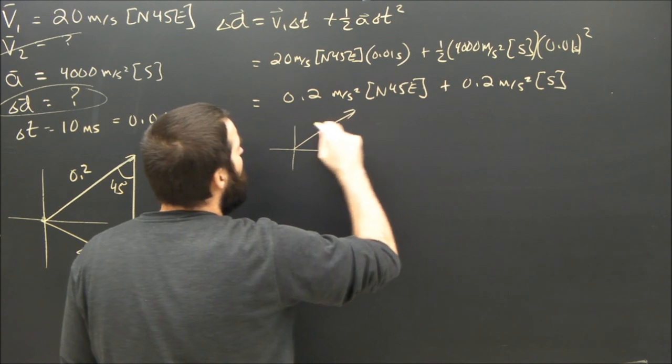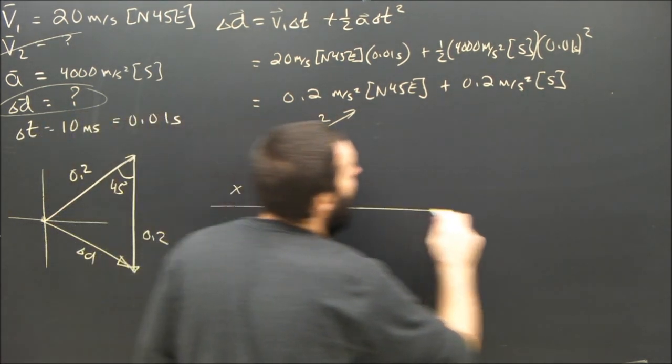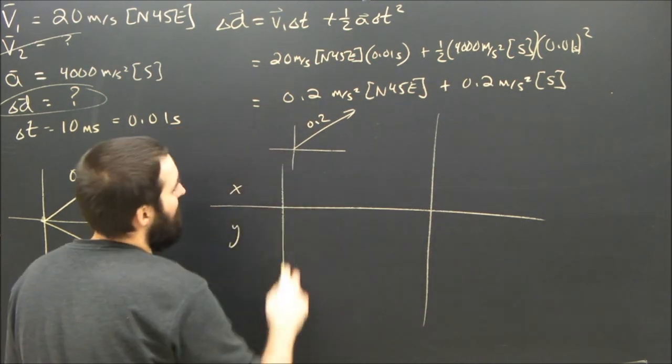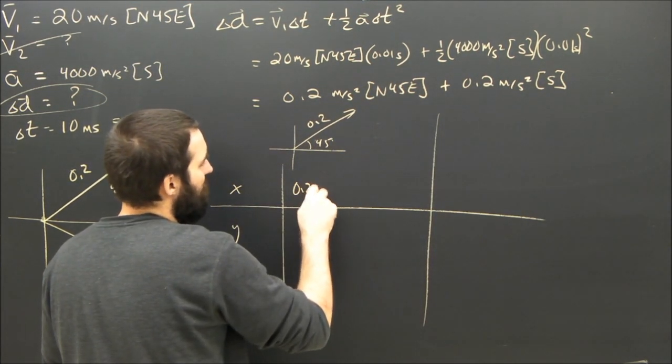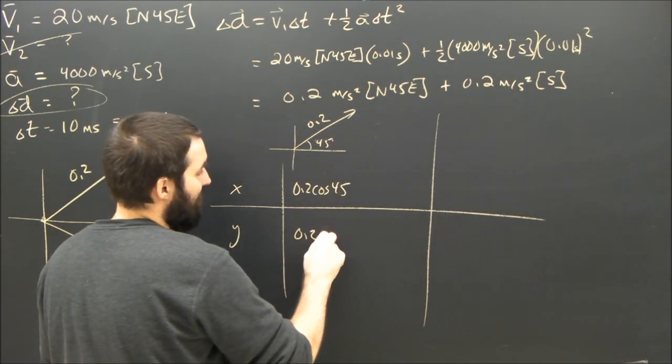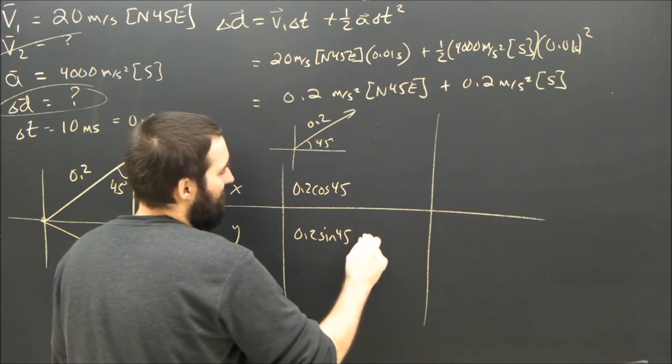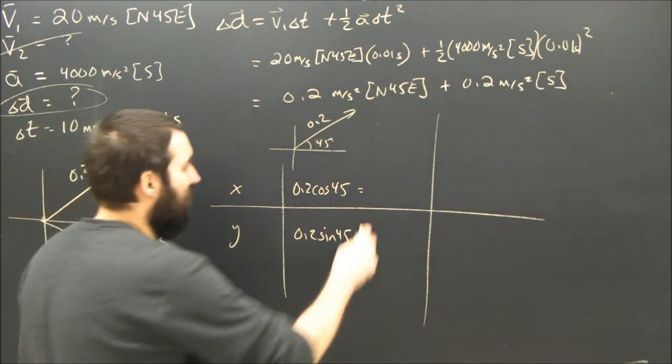We've got 0.2 north east. Well, that's going to give me an x component of 0.2 times the cos of 45, and a y component of 0.2 times the sine of 45, which are the same anyway, right? And they're both about 0.14, if I'm not mistaken.